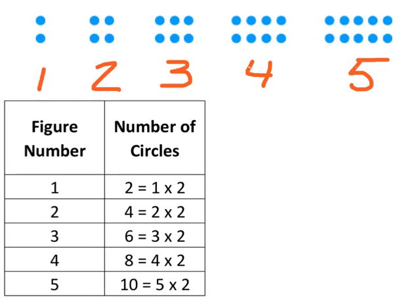So most of you probably have figured out that we're taking the figure number and we're multiplying it by two each time, and that gives us the number of circles. So two times two is four, three times two is six, four times two is eight, and five times two is ten. So these little sentences here are called equations.